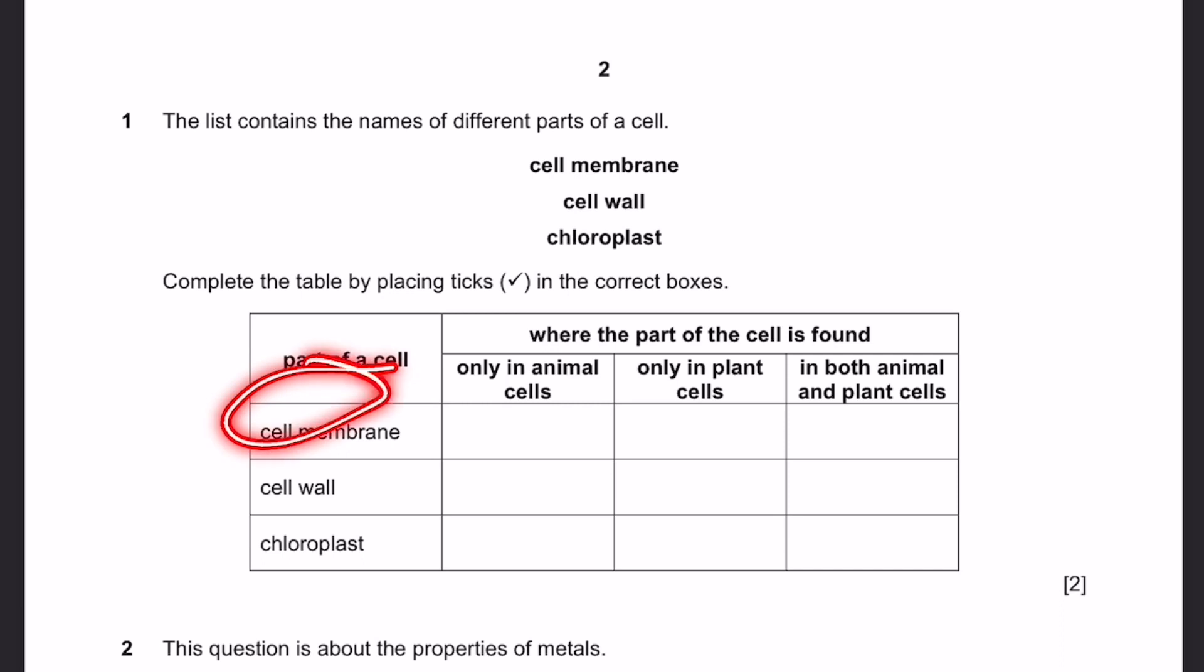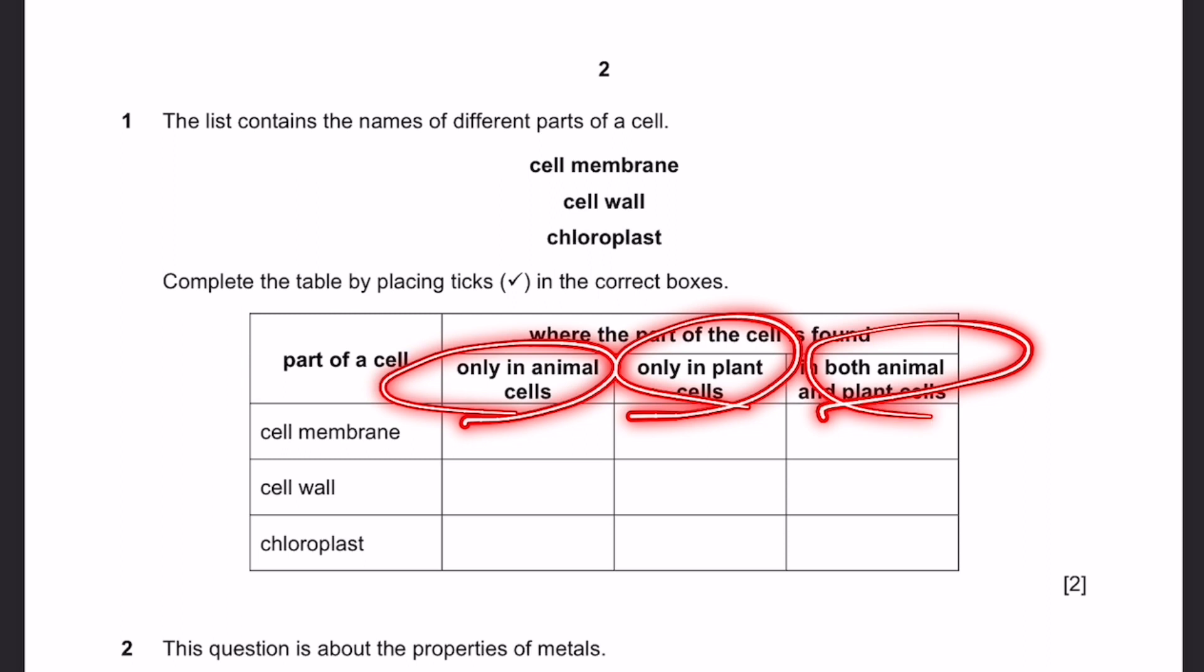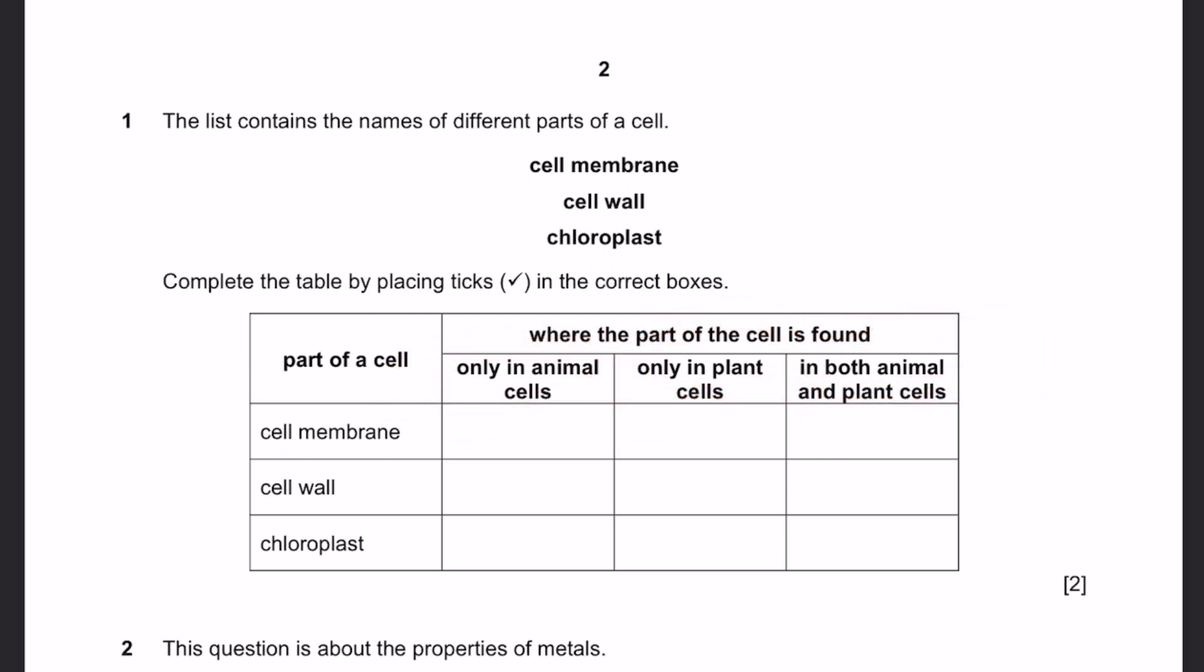So we have a cell membrane. Where is it found? Is it only in animal cells or in plant cells or in both? We know that this is found in both animal and plant cells.